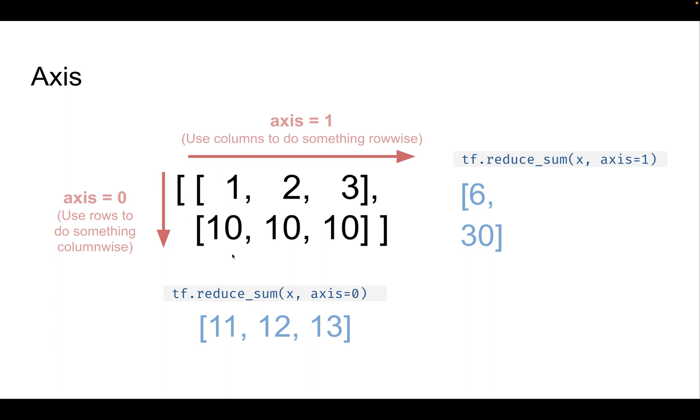Now in TensorFlow, if you try to get the sum of this tensor along axis 0, as I just shown here, what you'll get is the addition along each column. So 1 plus 10 is equal to 11, 2 plus 10 is 12, 3 plus 10 is 13. So if we put axis 0, then we are using all the rows to do something column wise.